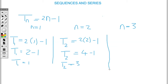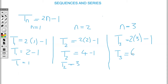To find my third term, I'll replace n with three. So we have t3 equal to two times three, take away one. So t3 equals two times three, that's six, take away one. So t3 is equal to five. That means the first three terms of this general term are one, three, and five.